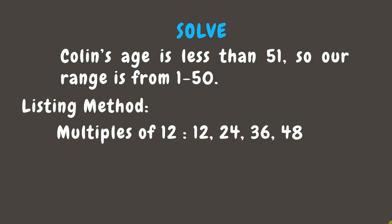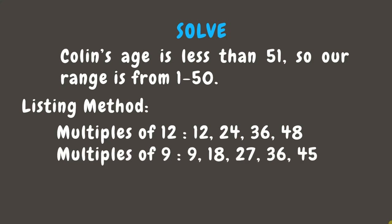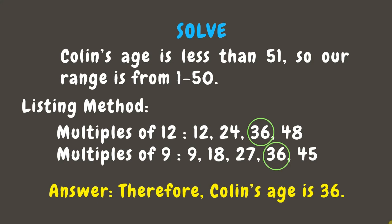Now let's list down the multiples of 9 that are below 51: 9, 18, 27, 36, and 45. Next, let's eliminate the uncommon numbers and look for the common multiple — and that's 36. Therefore, Colin's age is 36.